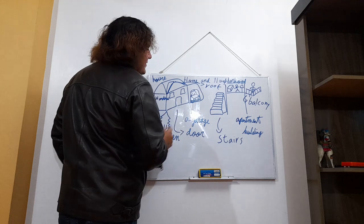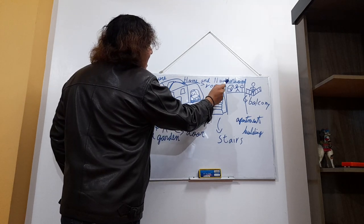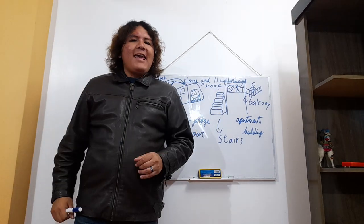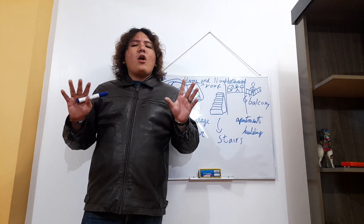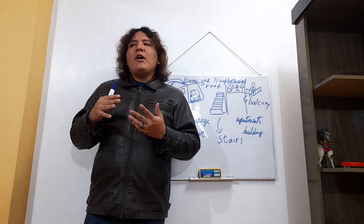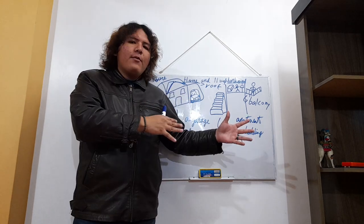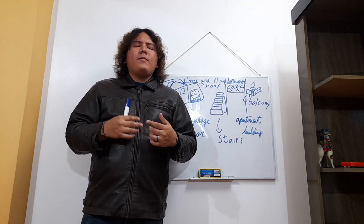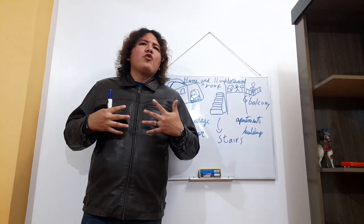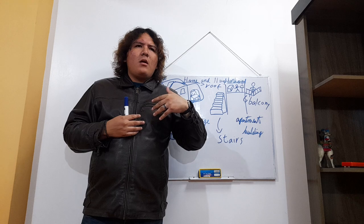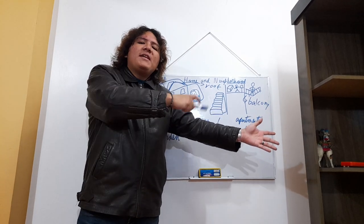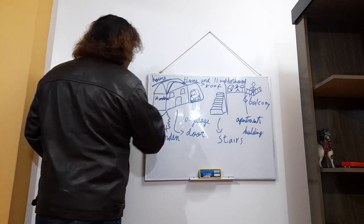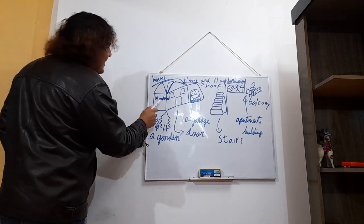Remember to spell 'neighborhood' correctly — N-E-I-G-H-B-O-R-H-O-O-D. A neighborhood is the area where you dwell, including not just your house but the houses of your neighbors too. A neighbor is the person who lives next to your house. In Spanish, that's 'vecindario.'